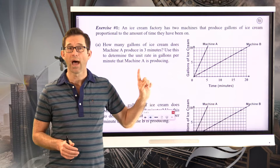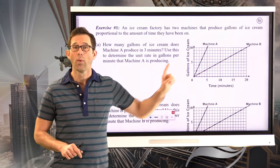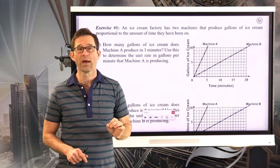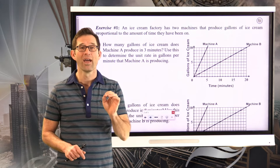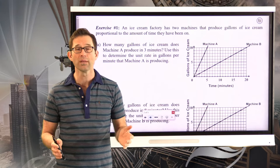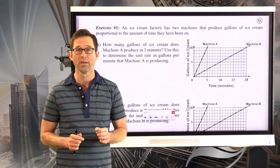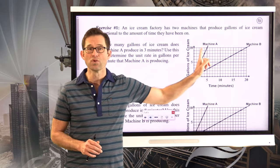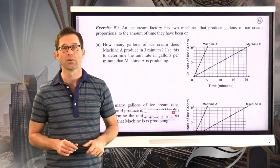Now, in order to calculate rates, what we need to do is we need to have a point that comes off of each one of these. For the first one, it asks us, it kind of sets us up. If we're talking about machine A, how many gallons of ice cream has it produced after three minutes? And then we want to figure out a unit rate based on that. So pause the video now, just machine A, and see if you can answer question letter A.